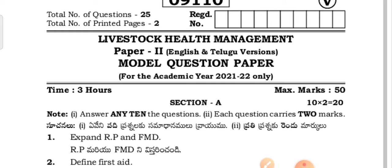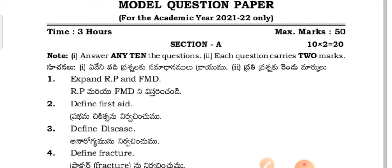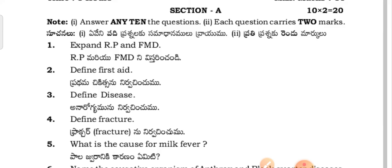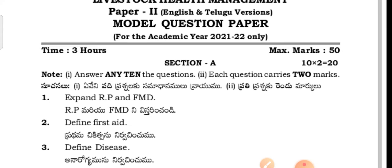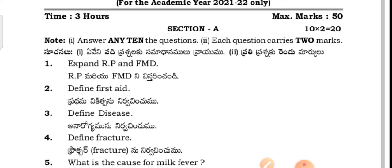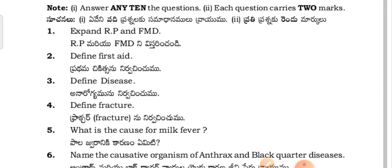For this LMDT course, there are three papers: Paper One, Paper Two, and Paper Three. These are model question papers for the current 2021-22 batch only. In Section A, for this academic year 2021-22 batch, the inter board is giving 50% choice.